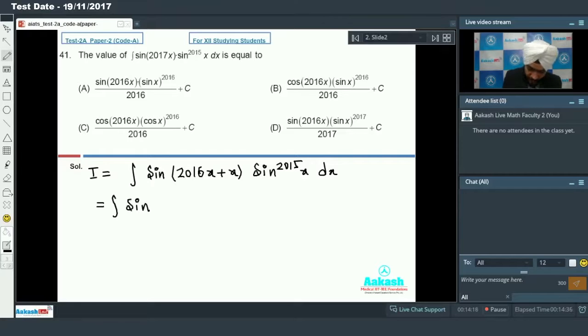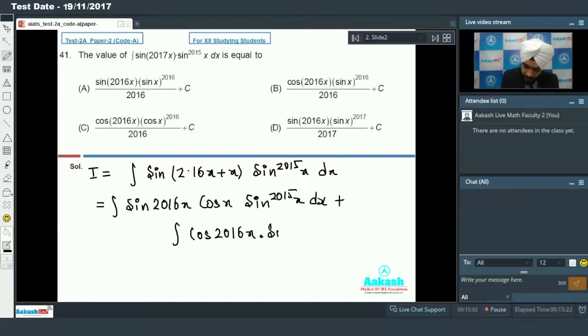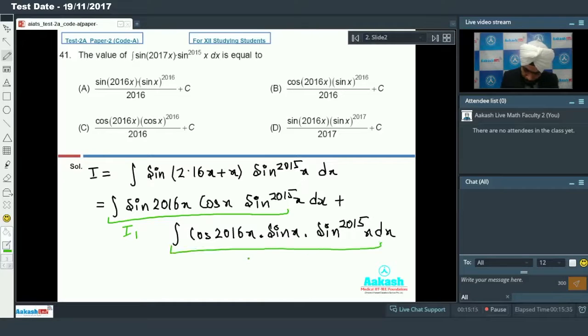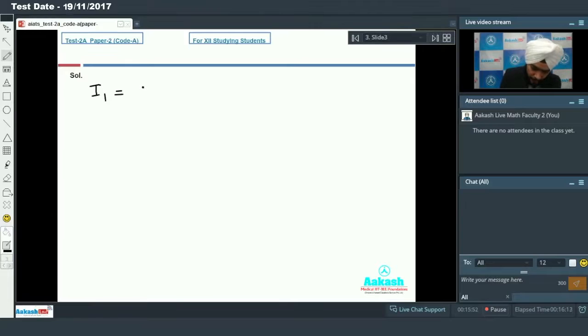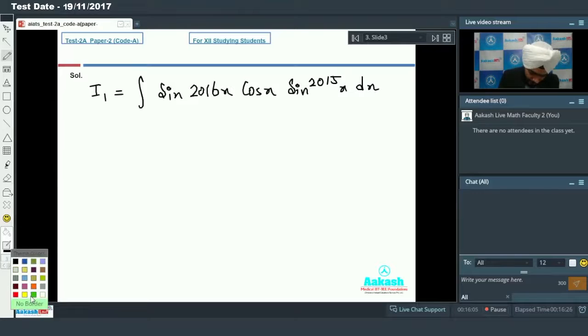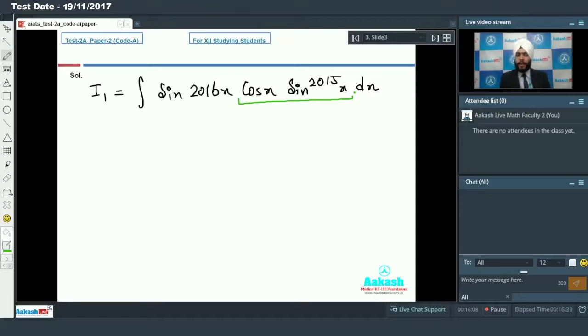Integration of sin 2016x cos x sin power 2015x dx will be the first term, plus the second term will be cos 2016x into sin x into sin power 2015x dx. I will write this as i1 and this as i2. For i1 by parts: sin 2016x into the integral of cos x sin power 2015x dx. This is a perfect integral. If I call sin x as t, then cos x dx will be dt.